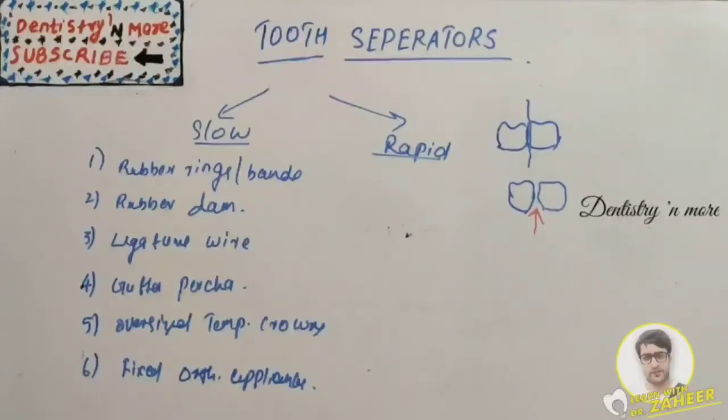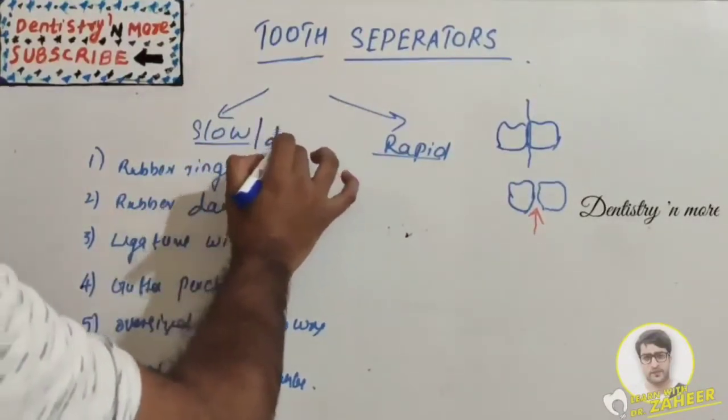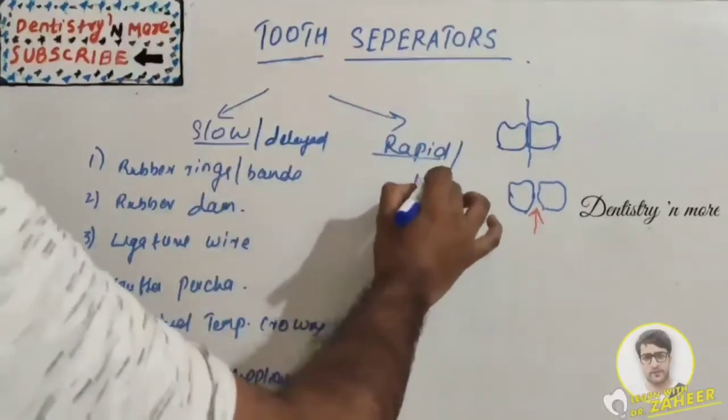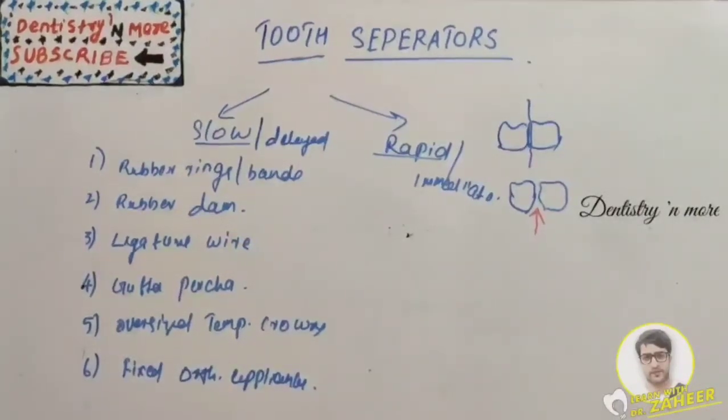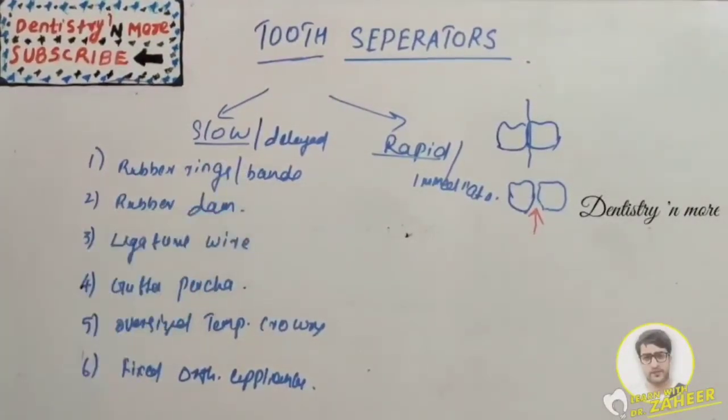We have basically two types of separation: slow separation and rapid separation. Slow is also known as delayed separation, rapid is immediate separation. Slow or delayed separation causes very slow movement of teeth over a period of several days or weeks. It is indicated when there is tilted, drifted, or rotated tooth in which rapid movement is not possible.